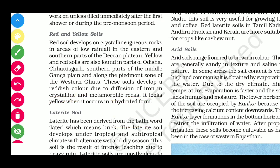Next, red and yellow soils. Red soil develops on crystalline igneous rocks in areas of low rainfall in the eastern and southern parts of the Deccan Plateau, where it is formed on crystalline igneous rocks.